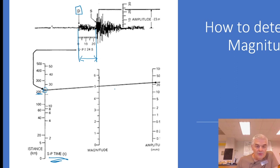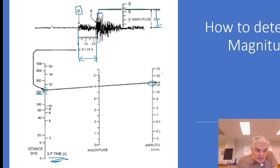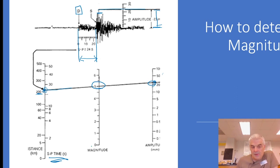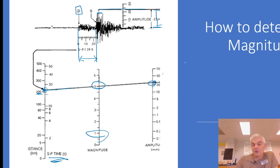The second thing you do is find the amplitude of the graph — the highest amplitude you can get. You measure this height, plot it onto the graph, and then make a line between the SP time and the amplitude. It cuts across — in this case at a five. It's a scale from basically zero to ten. Most earthquakes are down at ones, but a five is a pretty good earthquake. That's how they determine the magnitude of the earthquake.